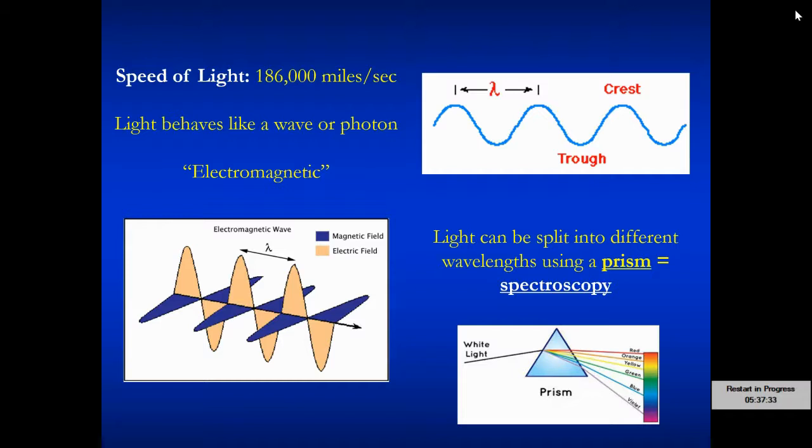Light carries wave characteristics, including a crest and a trough with wavelength in between. We also note that light, that wavelength of light, is actually electromagnetic in nature. When it's generated, whether it be from an electron moving from a higher to lower level or through nuclear fusion in the center of a star, when energy is produced, it actually disturbs space with an electric field, and that electric field actually propagates a magnetic field in a perpendicular direction.